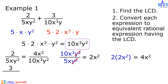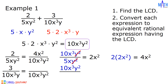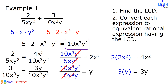Next, for 3 over 10x cubed y, let us convert this to an equivalent rational expression having the LCD. Divide 10x cubed y squared by 10x cubed y: 10 divided by 10 is 1, x cubed divided by x cubed is 1, and y squared divided by y is y. So 1 times 1 times y equals y. Multiply y by the numerator 3: 3 times y is equal to 3y. And 3y is the numerator.